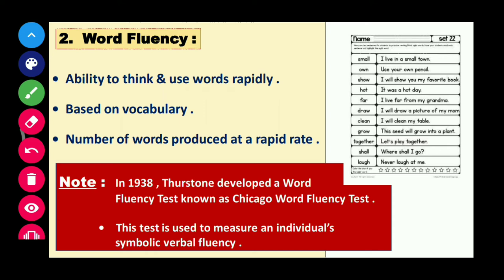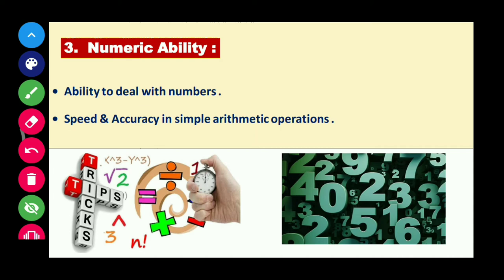Third is numeric ability. As the name suggests, this involves the ability to deal with numbers and arithmetic operations. It includes numeric functions like multiplication, division, addition, and subtraction. This ability also considers the speed and accuracy with which an individual can solve mathematical problems.